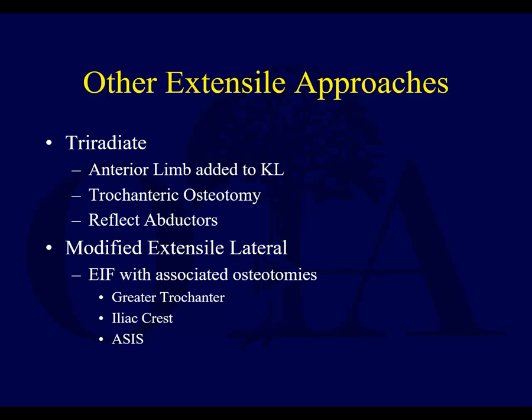There are other extensile approaches. The tri-radiate is a nice conversion approach — for instance, if you're doing a Kocher-Langenbeck and the posterior wall fracture extends far superiorly, and a trochanteric flip still doesn't give enough exposure because the patient's very muscular, you can do the tri-radiate. You make another incision in the skin, creating a tri-radiate pattern, then incise the tensor fasciae latae — sometimes obliquely so it doesn't retract out of control. You do your trochanteric flip and bring the abductors up, giving even better exposure of the supra-acetabular region.